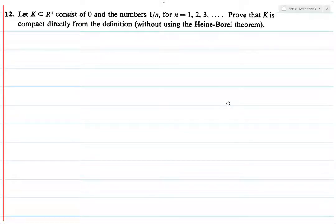All right, so we've got the set K, which consists of zero and all numbers 1 over n. So a half, a third, well, 1, a half, a third, a fourth, a fifth, a sixth, and so on and so forth.